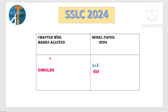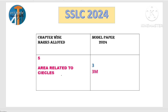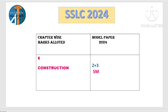Circles: 1 plus 3 — 3 marks theorem ಕೊಟ್ಟಿದ್ದಾರೆ, 1 mark theorem based problem. Total 4 marks weightage for circles. Next, area related to circles: ಒಂದು equation ಬರೆದು ಅದಕ್ಕೆ 3 marks — shaded region ನ find out ಮಾಡು ಎಂದು ಕೇಳ್ತಾರೆ.